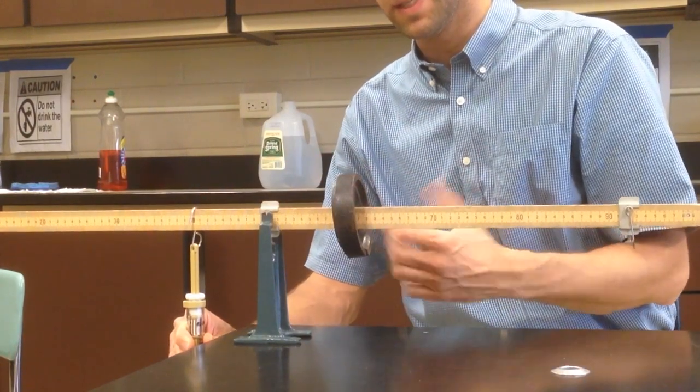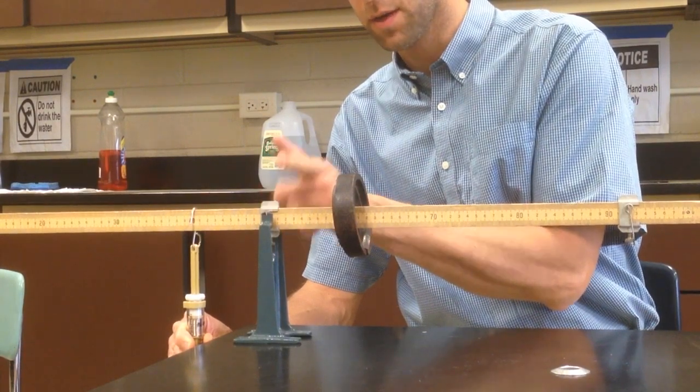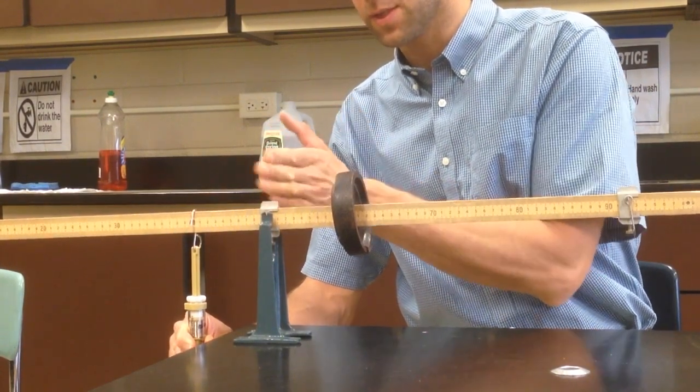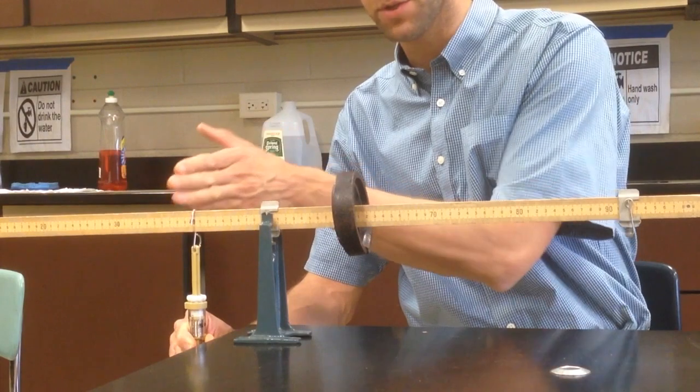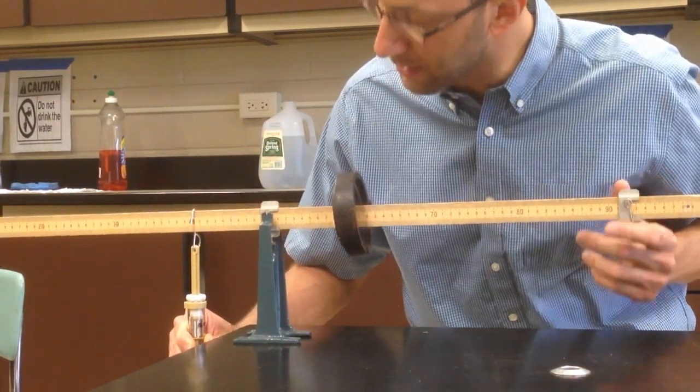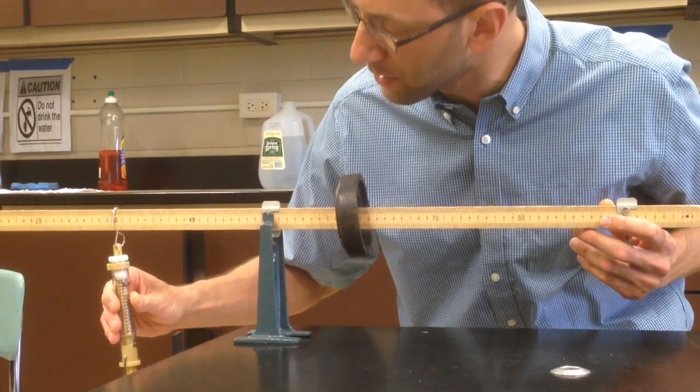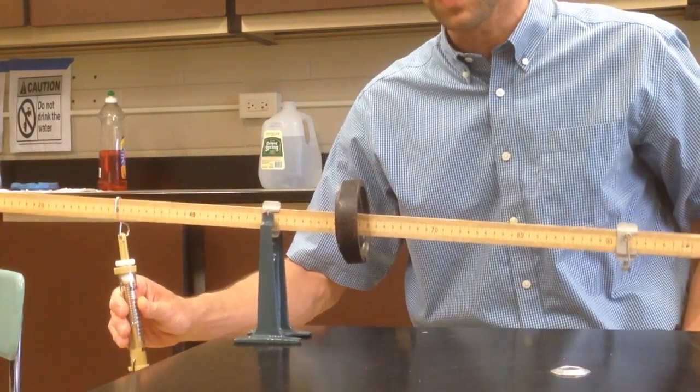The key idea is that 50 centimeters, where the fulcrum is, is your zero mark, and the distance from the fulcrum is always measured from there. So 40 centimeters is 10 centimeters from the fulcrum, 30 centimeters is 20 centimeters from the fulcrum.